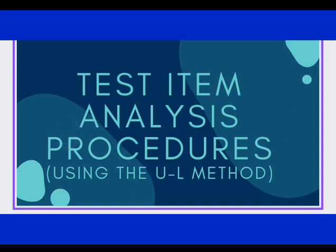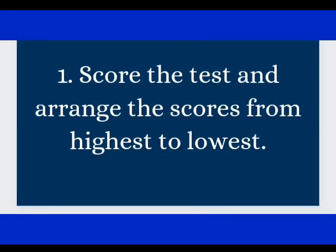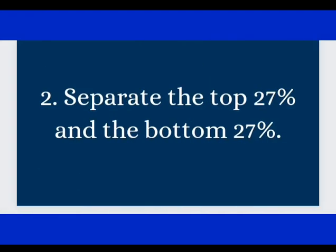Let's have the first step: score the tests and arrange the scores from highest to lowest. Then you have to separate the top 27% and the bottom 27%. I'd like to take 50 as the example of test takers here. Therefore, if we have 50 takers, we get the 27% upper and lower. So 27% of 50 is 13.5, so we need to round it off to 14.